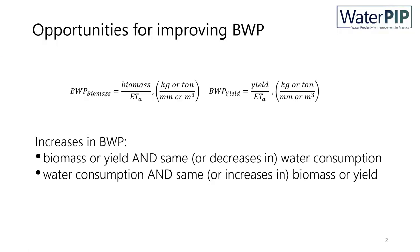As you know by now there are two ways to increase biophysical water productivity: either by increasing biomass or yield while at the same time maintaining water consumption stable